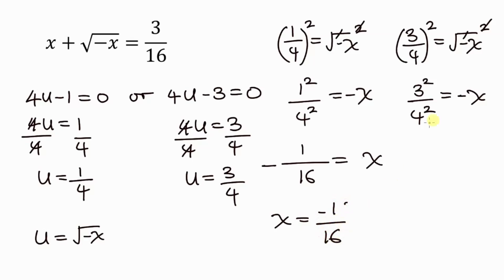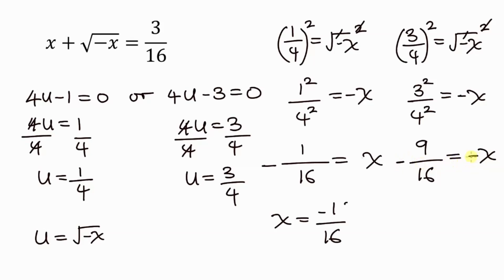For the second case, when u is 3 over 4: 3 over 4 equals the square root of negative x. Squaring both sides and distributing the square, 9 over 16 equals negative x. Multiplying both sides by negative, the value of x is negative 9 over 16.